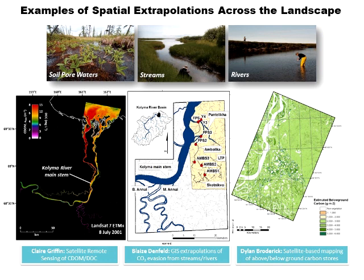It becomes quite useful for getting a feel for what happened in different years when we weren't in the field and in different locations along the main stem. We get a feel for whether we have downstream loading of DOC or different concentrations off-coast into the Arctic Ocean. Blaise Denfeld took measurements of pCO2 concentrations and interpreted them into CO2 evasion rates from streams and rivers, using GIS extrapolation of surface area to estimate how much CO2 was outgassing from these water body surfaces.